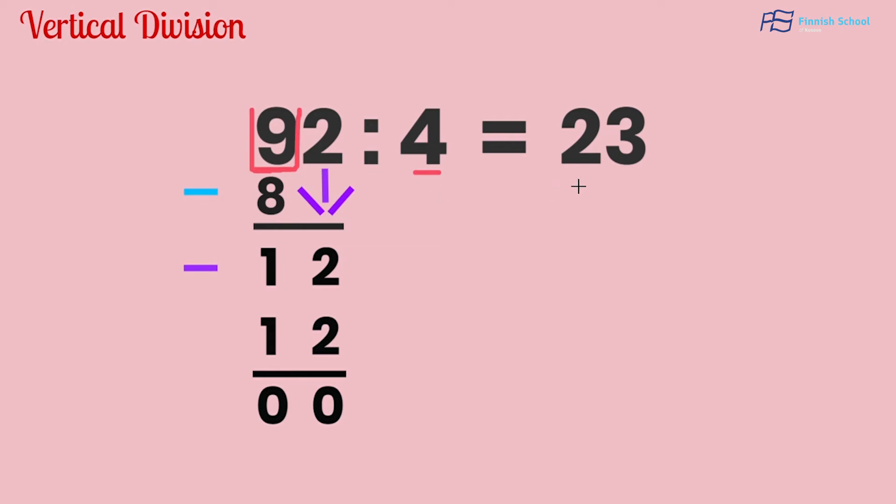We know that number can be 8 because 2 times 4 equals 8. We write the number 8 under the number 9, and we minus it.